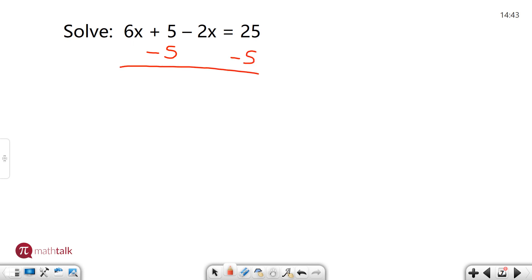It's a positive 5 so the opposite of plus 5 is minus 5. I'm going to subtract 5 from both sides. I'm going to bring down the 6x and the 2x, and then I'm going to do 25 minus 5 is 20. So now all my x's are on the left and my number is on the right.